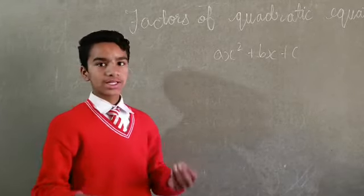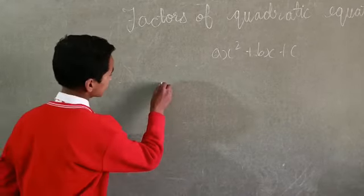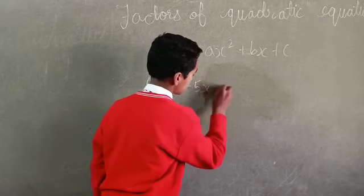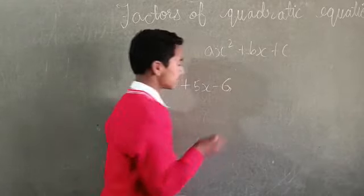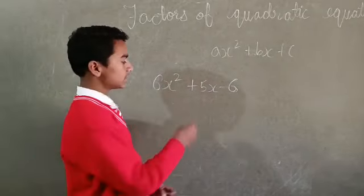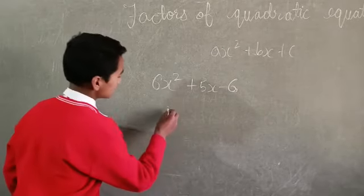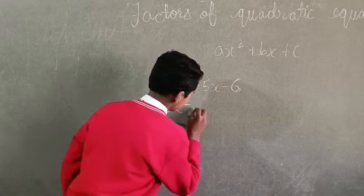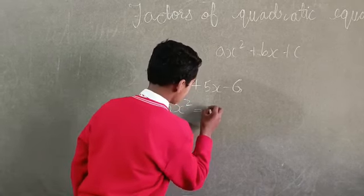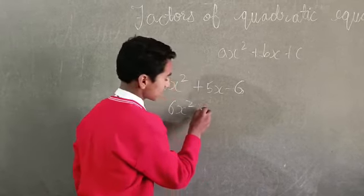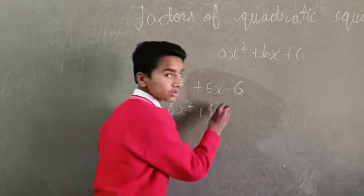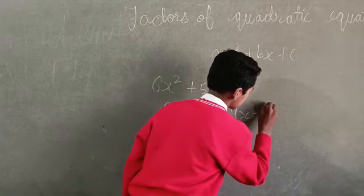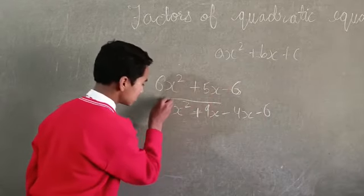Now, dear friends, let's take an example. The first step is to split the middle term. So, 6x² + 5x - 6 is equal to 6x² + 9x - 4x - 6. Dear friends, these are two groups.